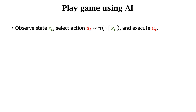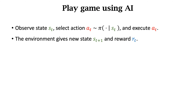How do we use AI to control Mario to play the game? We will use reinforcement learning to learn a policy function pi. The AI will use the policy function pi to control Mario. Observing the current state st, the AI uses pi to compute probabilities and then randomly samples an action at. After the agent executes action at, the environment will update the state to st+1 according to the state transition function, and the new state st+1 and reward rt are provided to the agent.